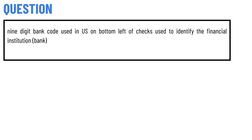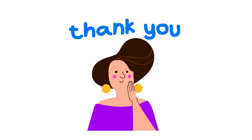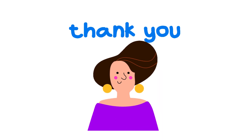Today's question: what is the nine-digit bank code used in the US, found on the bottom left of checks, used to identify the financial institution? The correct answer is routing number. If you have any questions, just leave a comment and I will be answering you as soon as I can.